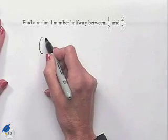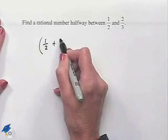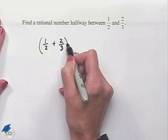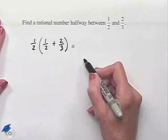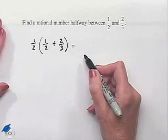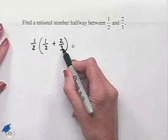Now let's use order of operations to help us evaluate this. We're going to add together the fractions inside the set of parentheses.